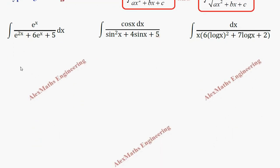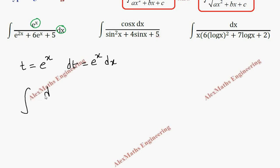So let's take the first problem and we are going to take t as e power x and its differentiation dt is e power x dx. So in the numerator, we have e power x dx. It will become integral dt by e power 2x, which is nothing but t squared, then we have plus 6t plus 5.